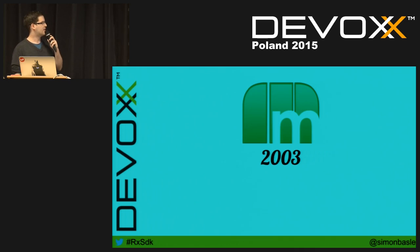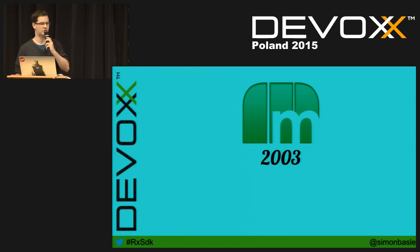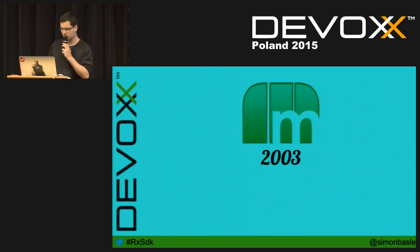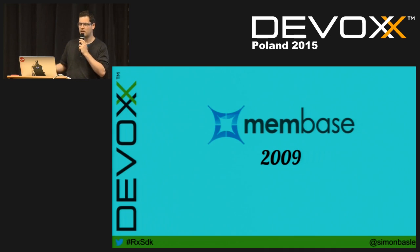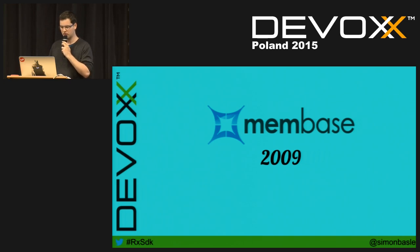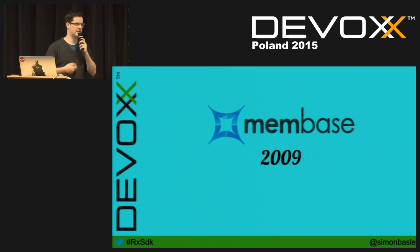It was a pretty popular project, and by 2004 many people were contributing — it's an open source project. A lot of the main contributors are actually working at Couchbase now. But it was missing persistence. So fast forward to 2009, where the Membase project started, aiming at a still cache key-value oriented store but adding replication around nodes and persistency to disk.